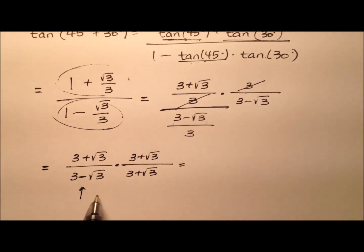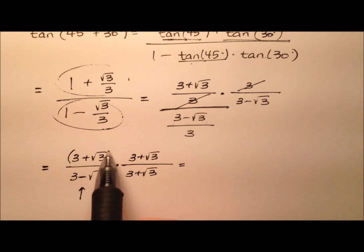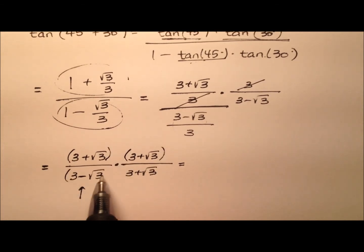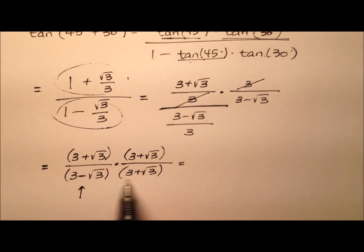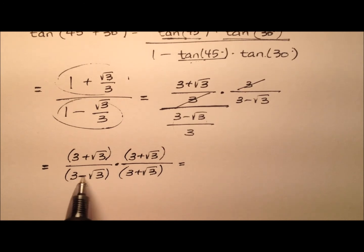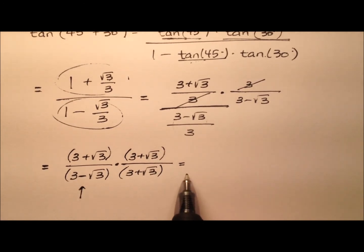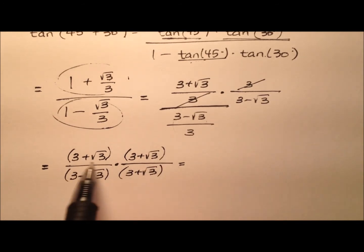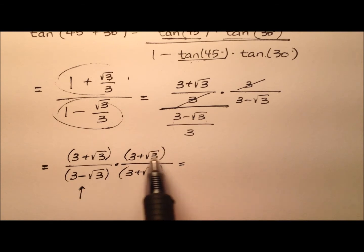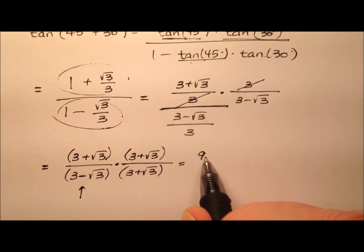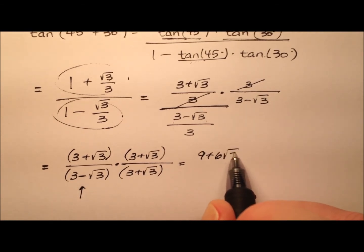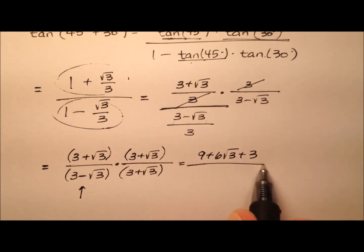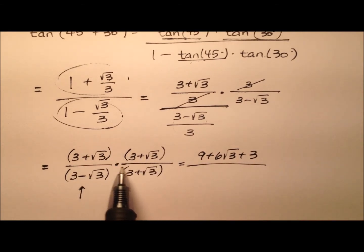This is nice because the denominator is set up as the difference of squares, where we have the same terms but one is minus and one is plus — a very nice multiplication. For the numerator, when I multiply these out, I'll have 9 plus 6 radical 3 plus 3, using the perfect square binomial formula.